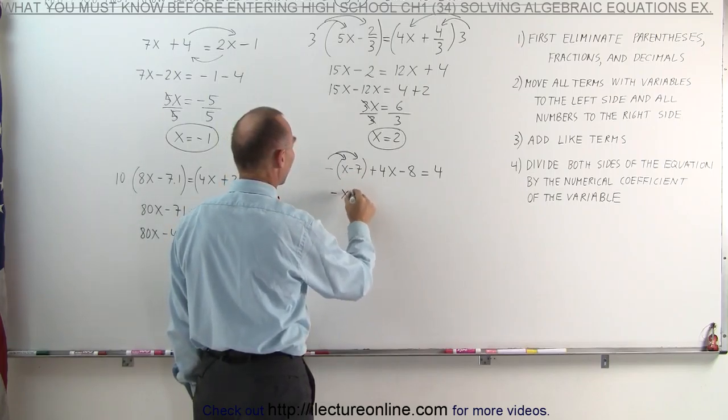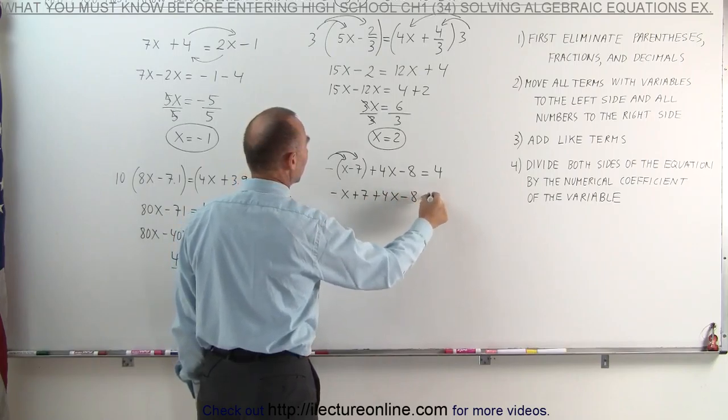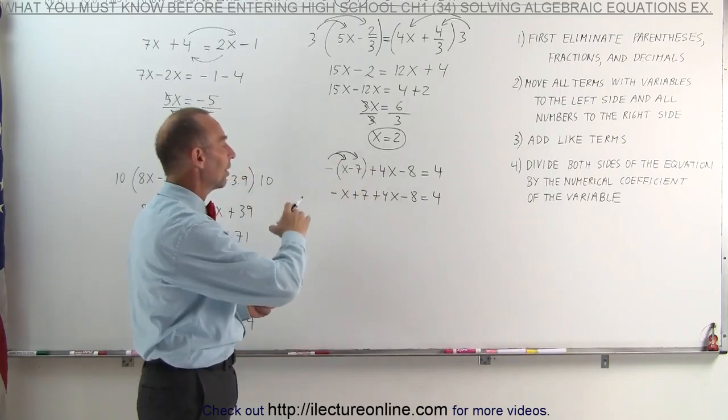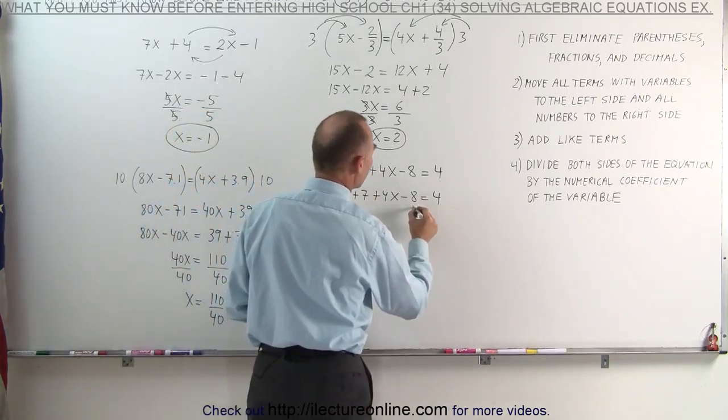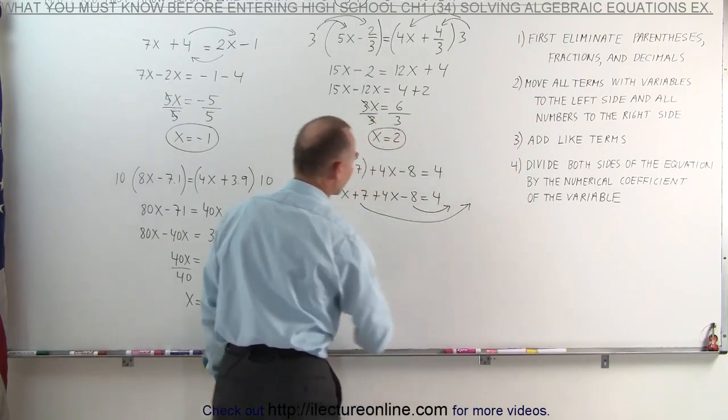This becomes minus x plus 7 plus 4x minus 8 equals 4. All the terms that have an x in them already are on the left side of the equation. But we do need to move the numbers, the negative 8 and the plus 7, to the right side of the equation.